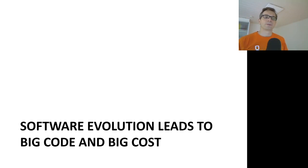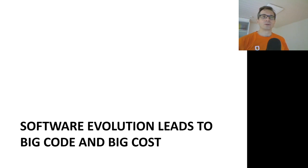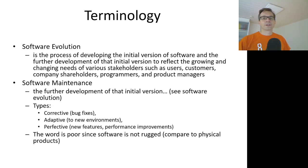Next we look at software evolution, which explains why software gets so big. It also explains the costs related to developing large software, and partially explains the varying levels of quality we can see in the source code.